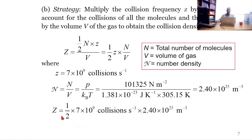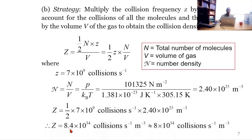Capital Z can now be obtained by substituting: the factor of one-half, the collision frequency z, and the number density. This evaluates to 8.4 × 10³⁴ collisions per second per meter cubed, which approximates to 8 × 10³⁴ collisions per second per meter cubed.